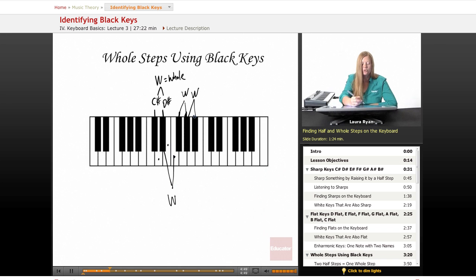The same is true for A sharp. A sharp to B natural is one half step. B natural to C is another half step. So, A sharp to C, or as we would call it in this case, A sharp to B sharp is a whole step.